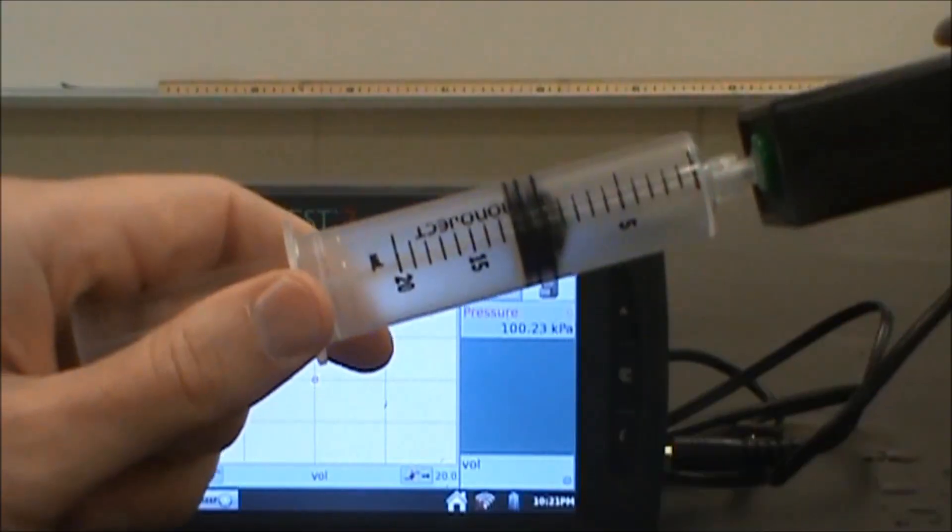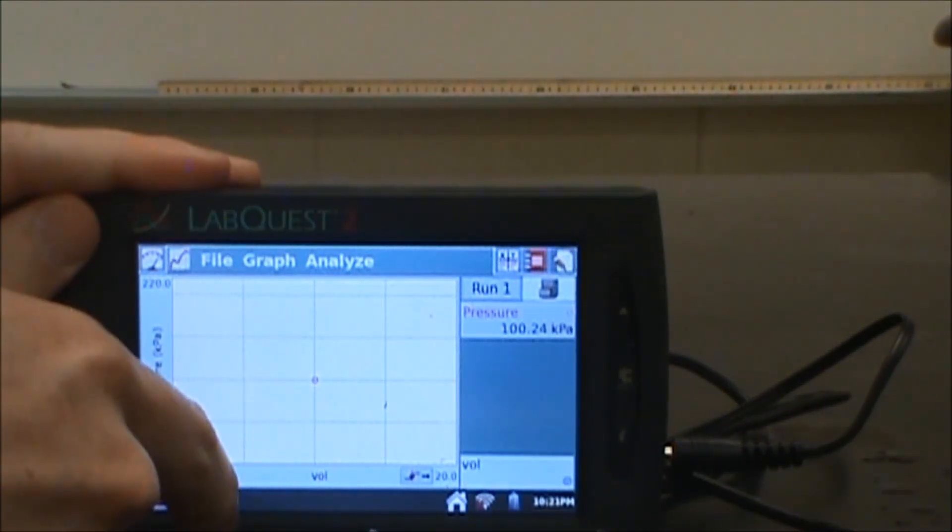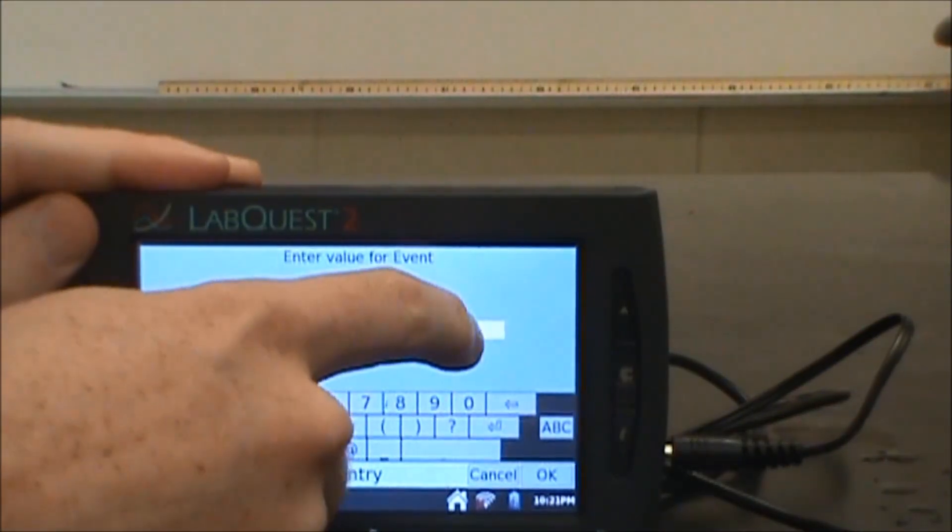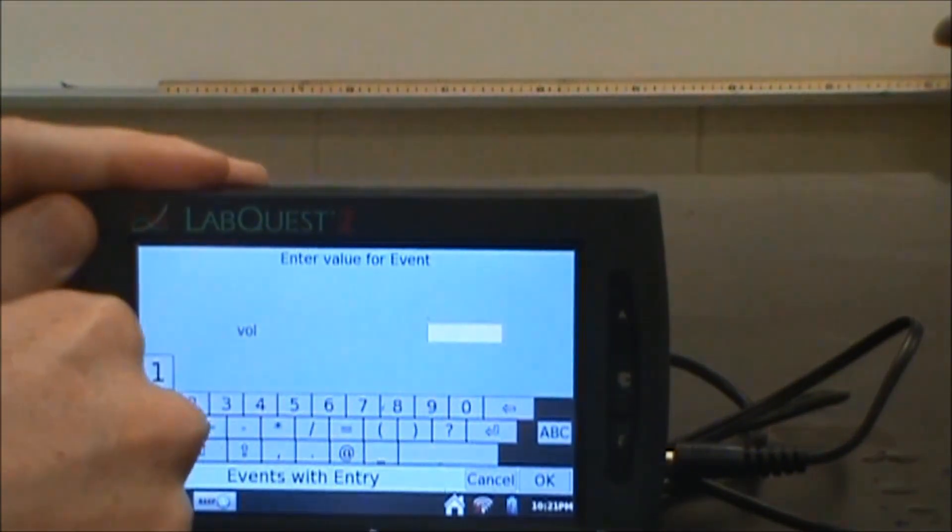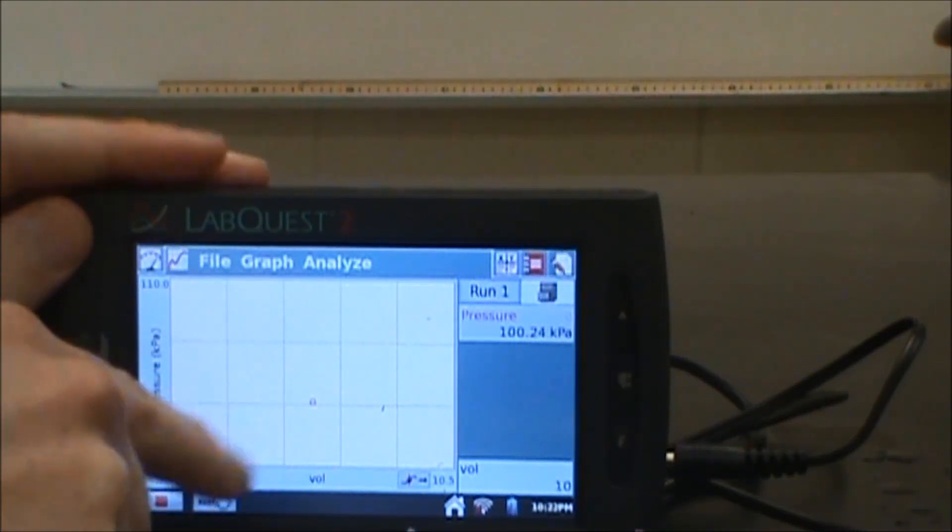I'm starting at 10 milliliters for my syringe here. If I hit the keep button down here, I can type in that the volume is 10 milliliters. Then it will plot that for me, the pressure and the volume.